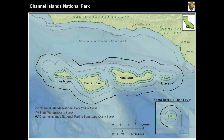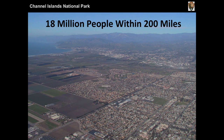From the islands, we have 18 million people in a 200-mile area, and remember half that area is water — so it's a huge concentration of people. Those people have an impact on the islands.